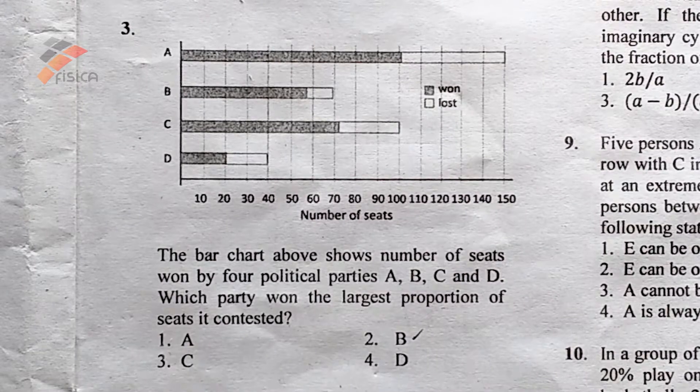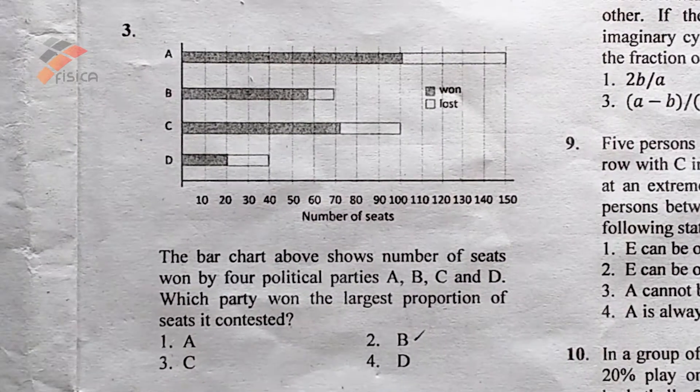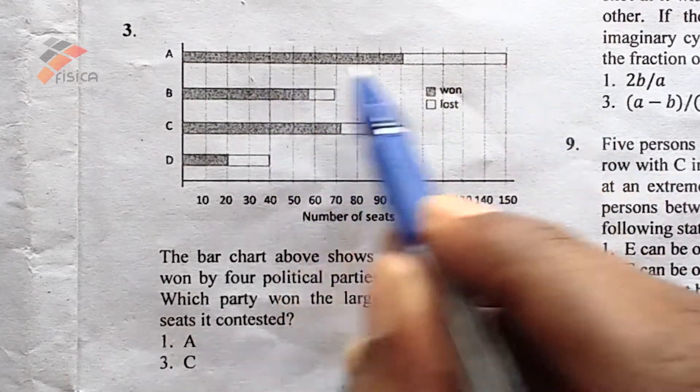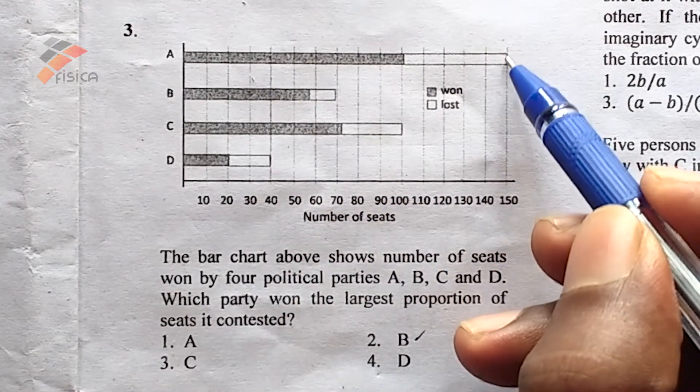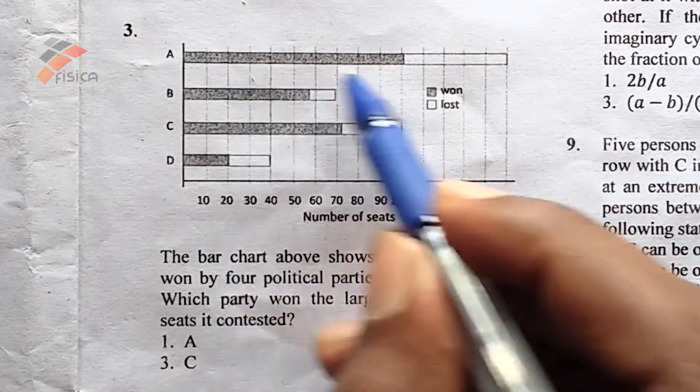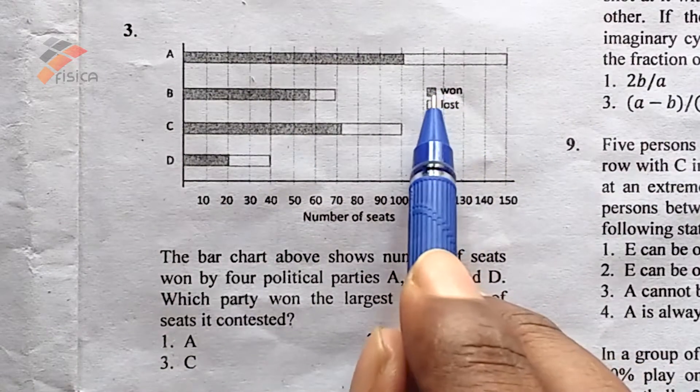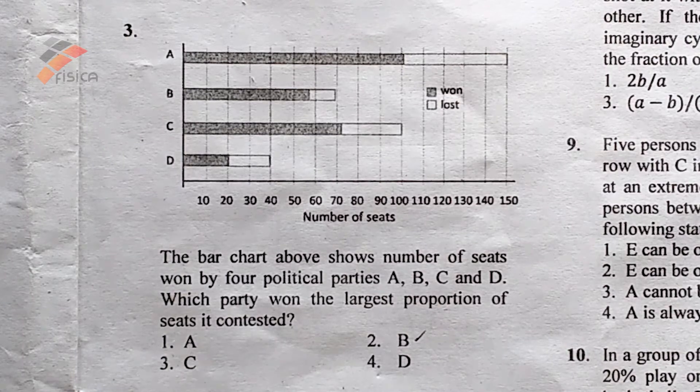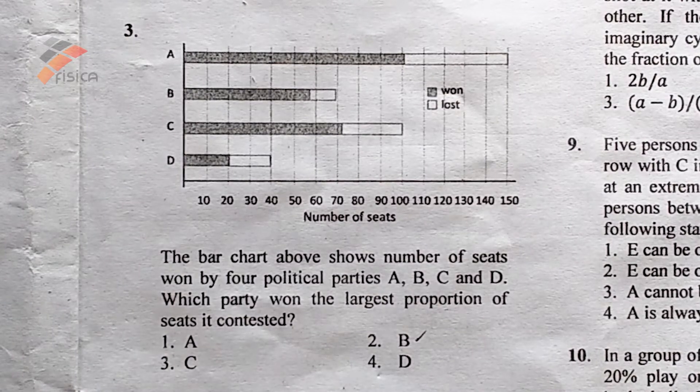The options are A, B, C and D. So this is the given bar diagram and this is the total seats it contested, and the shaded portion shows the seats won by the party. We are asked to find out the party which won the larger proportion of seats.